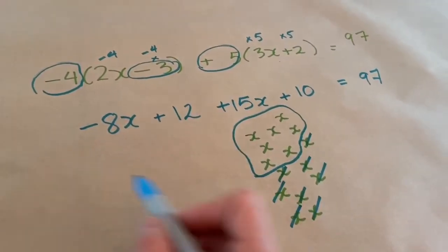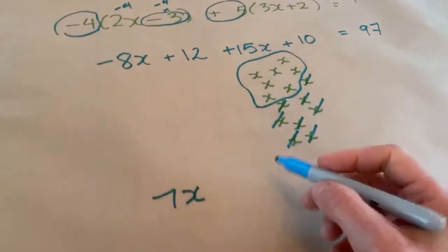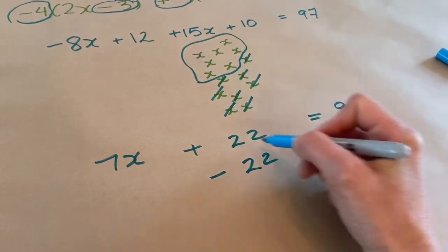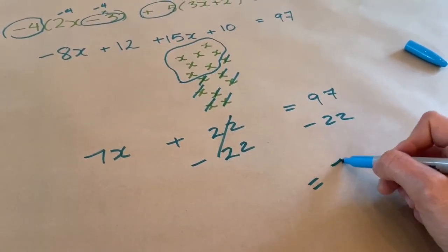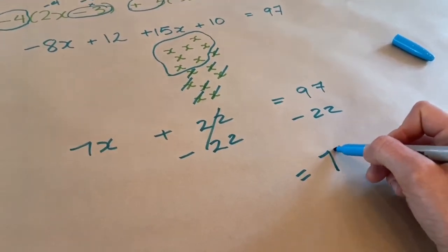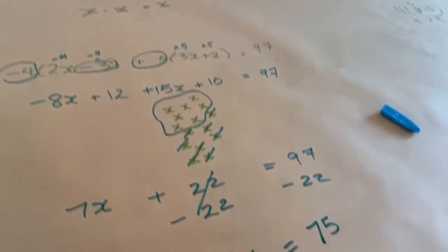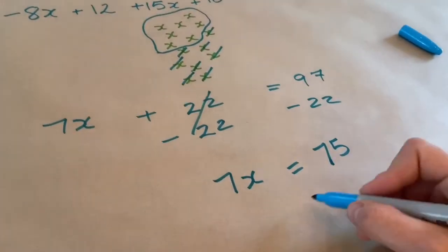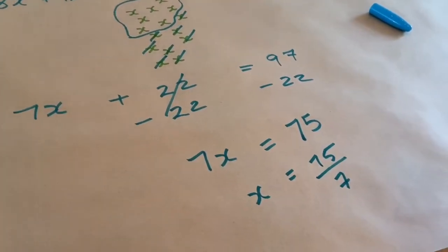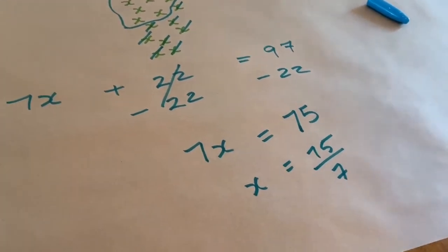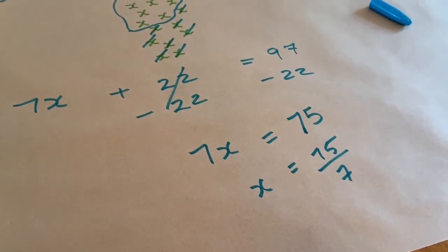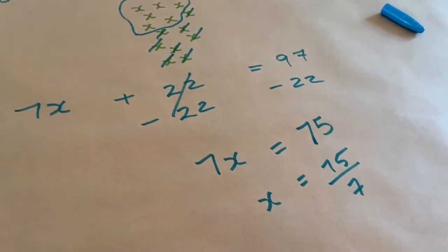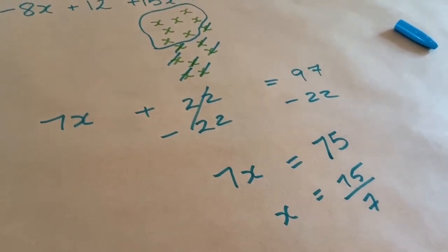So here we've said 15x minus 8x gives me 7x. 12 plus 10 gives me 22 equals 97. Now we can just do simple algebra. These cancel out. 97 minus 22 gives you 75. So this is a question I came up with, but it's not going to give you a nice answer. 75 divided by 7, I believe that's going to be a decimal. So sometimes you get decimals. That is your answer for that question. Now I'm surprised I made a question with a decimal, but I must have. Unless you're out there and you see a mistake that I've made in this video, please let me know.